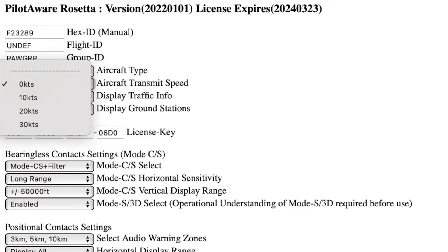With the latest software there is a new feature called the Aircraft Transmit Speed. This allows you to select the speed at which PilotAware transmits its beacon — either stationary, 10 knots, 20 knots, or 30 knots. Many users will choose the stall speed at which to start transmitting. This is useful if you're on the ground at a busy airfield and don't want to transmit your location. However, you must remember that the beacon will not transmit until you reach the ground speed selected.